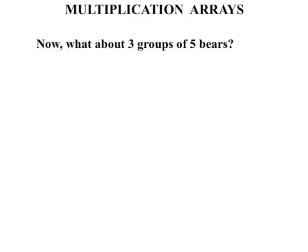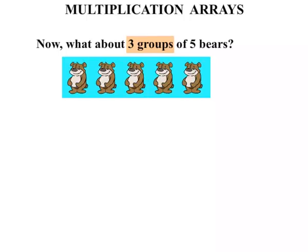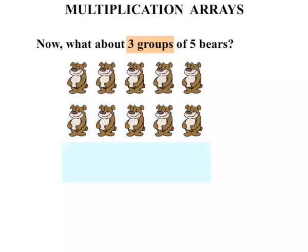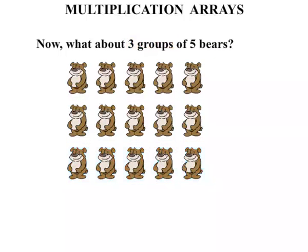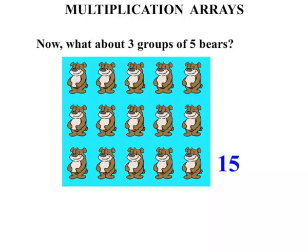Now what about three groups of five bears? So we've got five bears this time in each group: one, two, three, four, five. And this time three groups — there's our first group, our second group, our third group. We have three groups. Let's count them in fives: five, ten, fifteen.